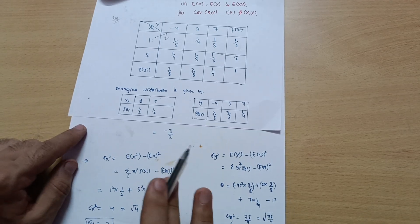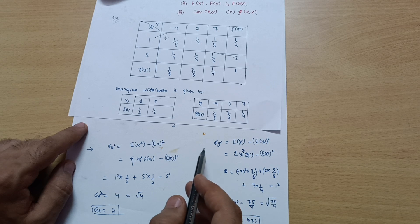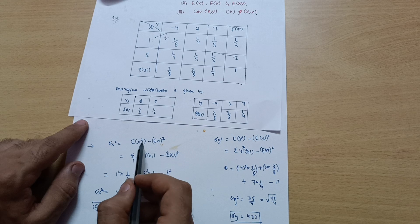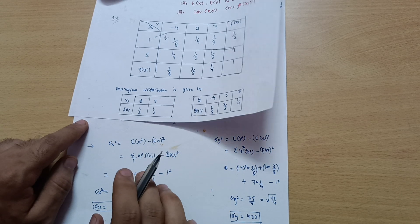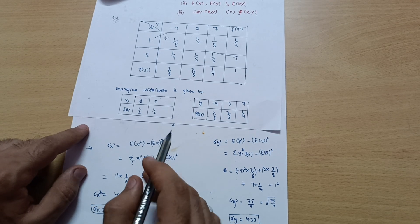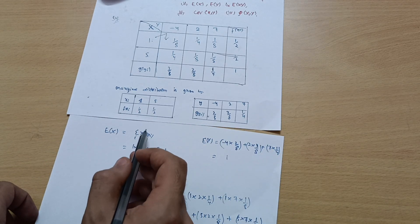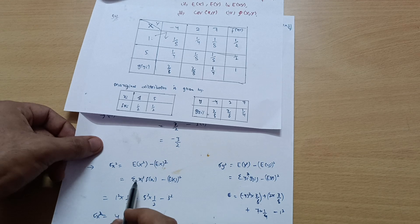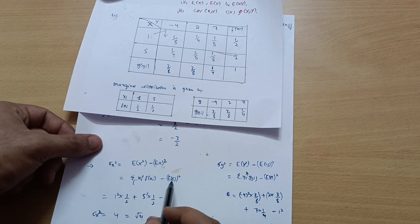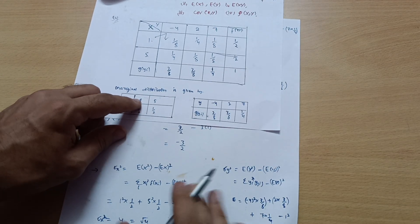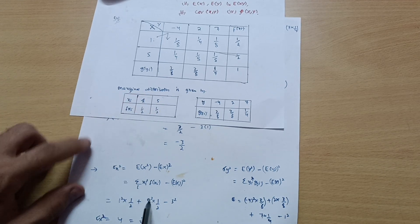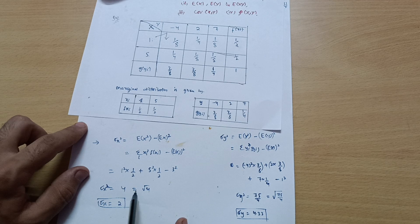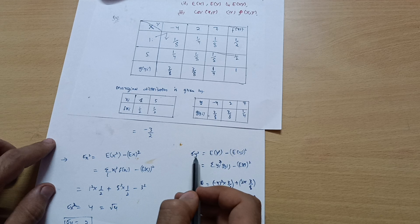To calculate the correlation, we need σ(X) and σ(Y). The formula for σ²(X) = E(X²) − [E(X)]². E(X²) = Σ xᵢ² · f(xᵢ) = 1² × 1/2 + 5² × 1/2. Then subtract E(X)² = 3² = 9. This gives σ²(X) = 4, so σ(X) = √4 = 2.